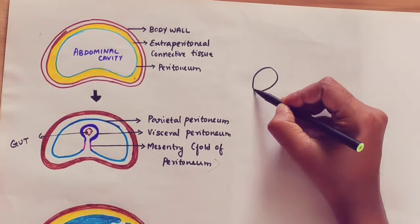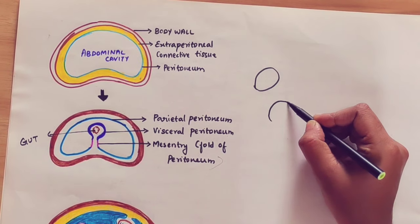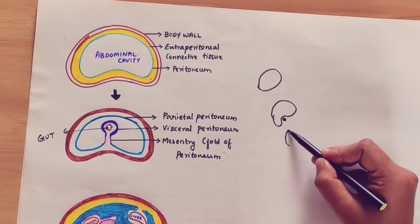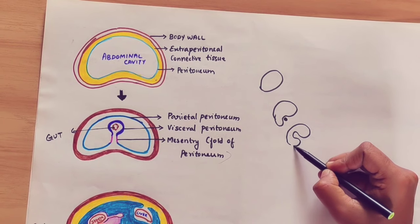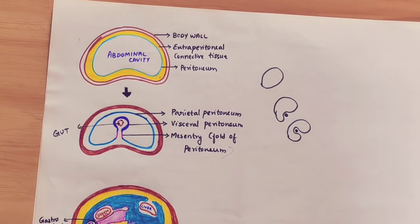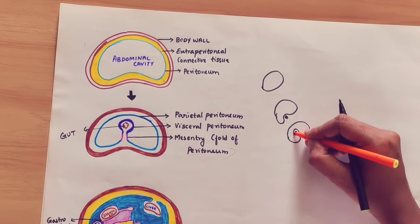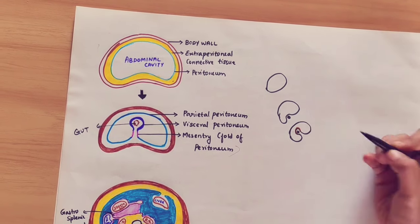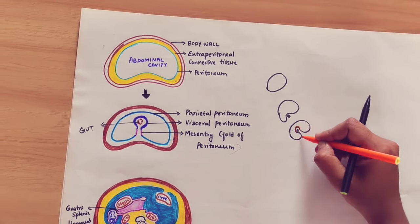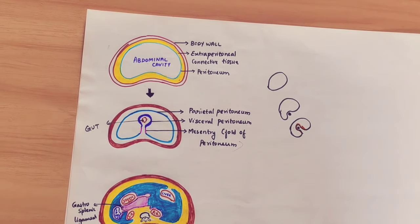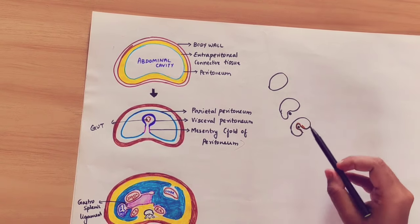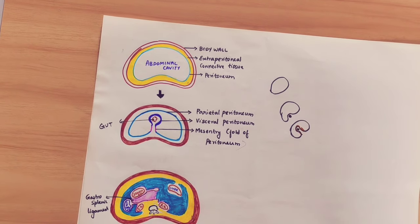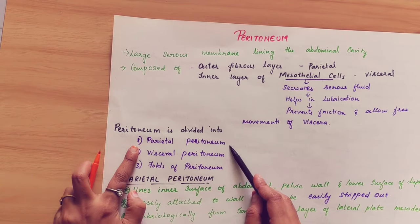Think of the peritoneum like a balloon. If this is an organ pressing into the balloon, the layer covering the organ is called the visceral layer. The layer on the outside is called the parietal layer. The visceral layer is also made as a fold of peritoneum. This gives rise to the greater sac and lesser sac, which divides the peritoneum.